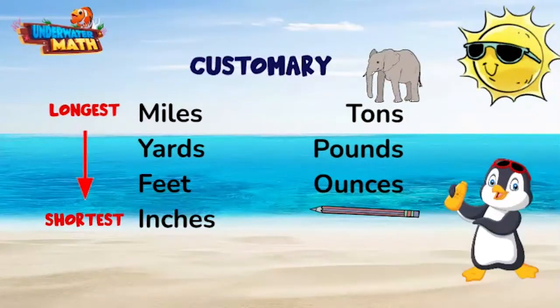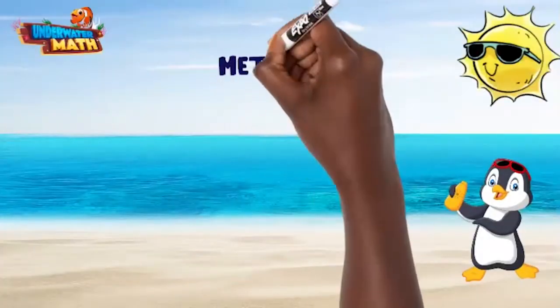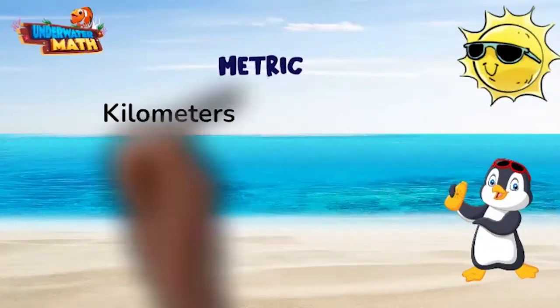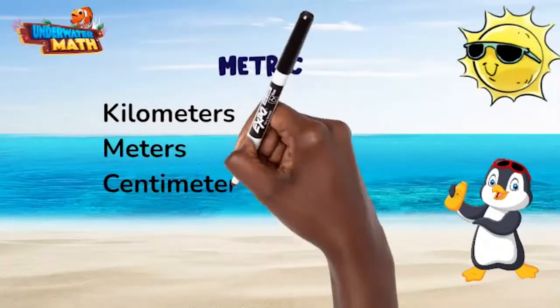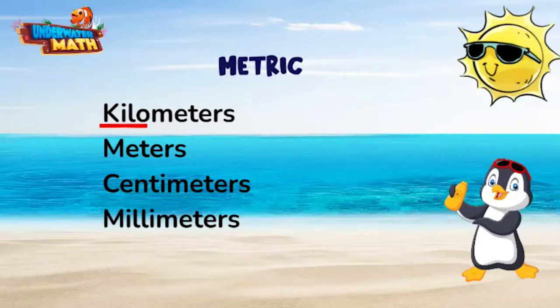A ton is like an elephant and an ounce is like a pencil. Metric units have kilometers, meters, centimeters, and millimeters for length. The prefix kilo means 1000, so there are 1000 meters in one kilometer, 100 centimeters fit inside one meter, and 10 millimeters fit inside one centimeter.